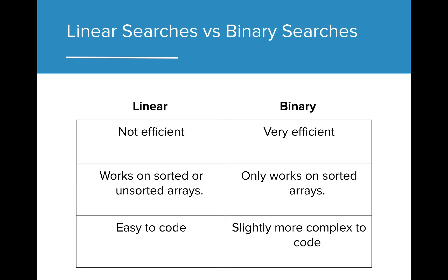When comparing our two searches, there are three important things to remember. First, our binary searches are much more efficient than our linear searches. Second, our linear searches will work on any array, but our binary searches only work on a sorted array. Finally, as we will see coming up, our algorithm for binary searches is a little more complex than our linear search.